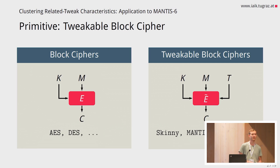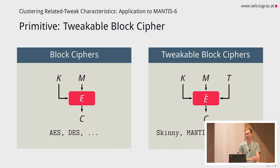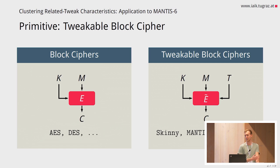With traditional block ciphers, we always have to build some kind of mode of operation around them to, for example, get rid of this determinism. Examples of tweakable block ciphers include Skinny, MANTIS, and KAMA.